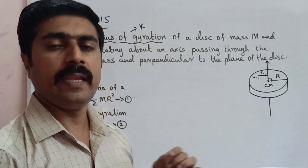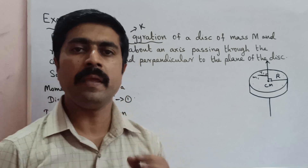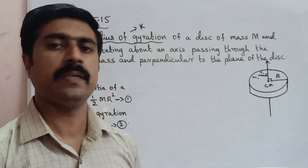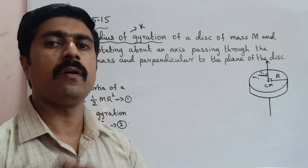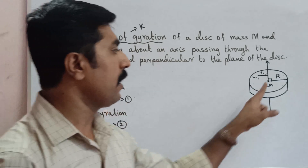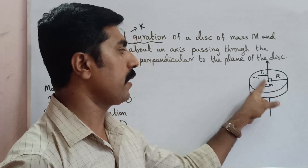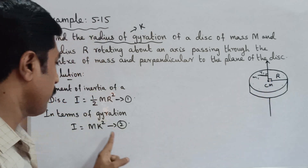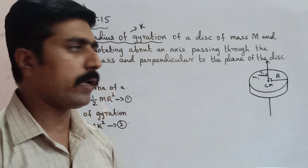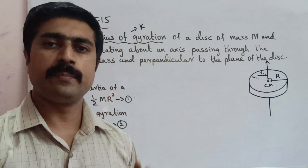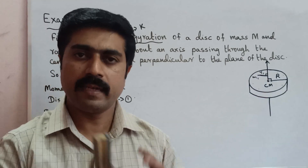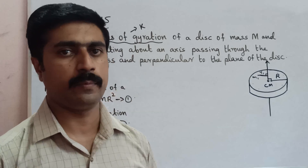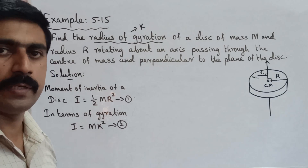The radius of gyration is the mean square root of the distances of all the particles of the body from the axis. It represents the average distance of particles from the axis, giving us the radius of gyration K.